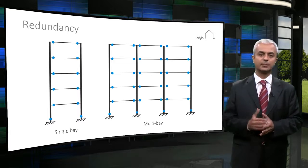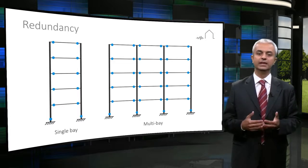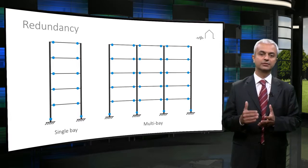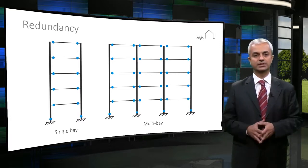Redundancy increases the capacity of this redistribution since it increases the alternative load paths and/or number of plastic hinges.